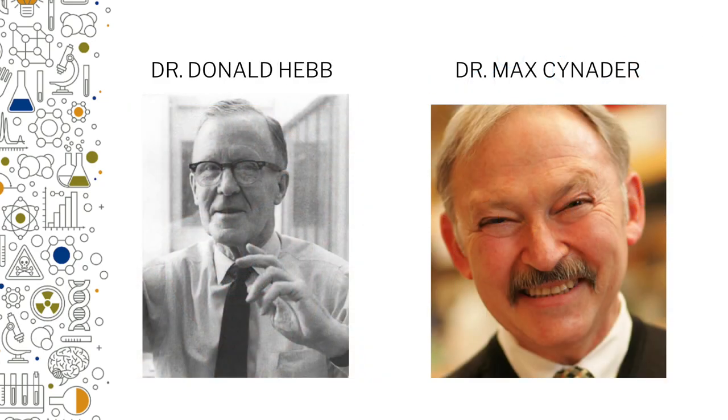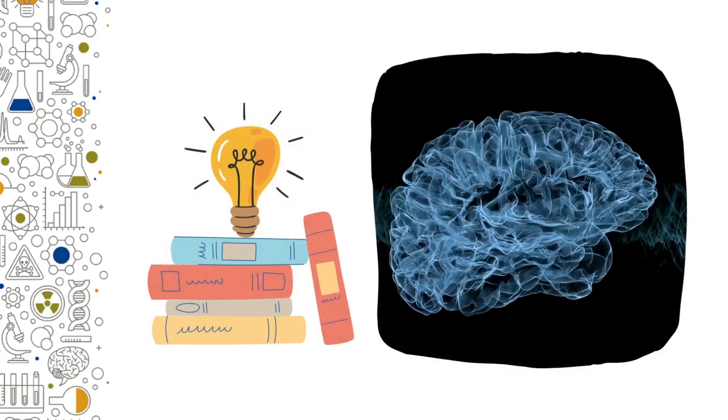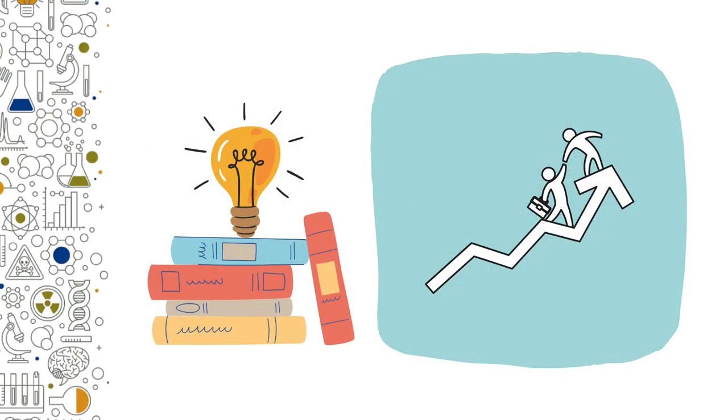Both Hebb and Cynader changed how we approach learning and memory, and how we teach our children. They taught us just how important the environment is for neuroplasticity. In fact, their discoveries have helped schools the world over create effective teaching strategies for young children and, of course, teenagers.